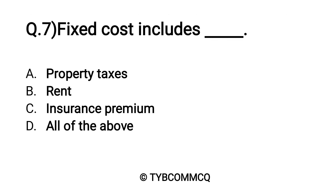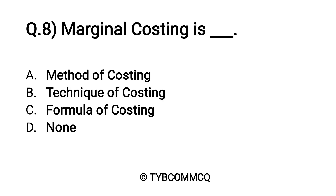Question number seven: Fixed cost includes dash dash. Option A: property taxes, Option B: rent, Option C: insurance premium, and Option D: all of the above. Yes, Option D — all of the above — is the correct answer. All three items are included in fixed cost.